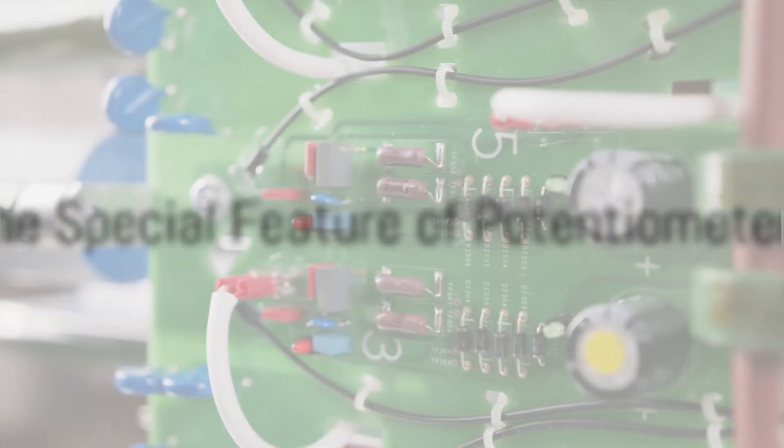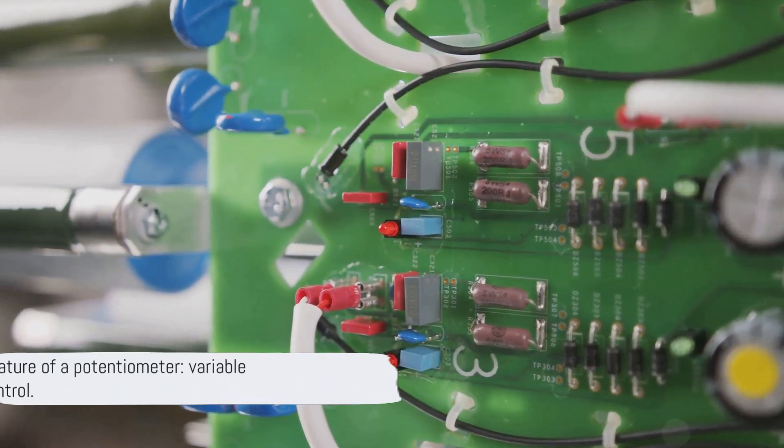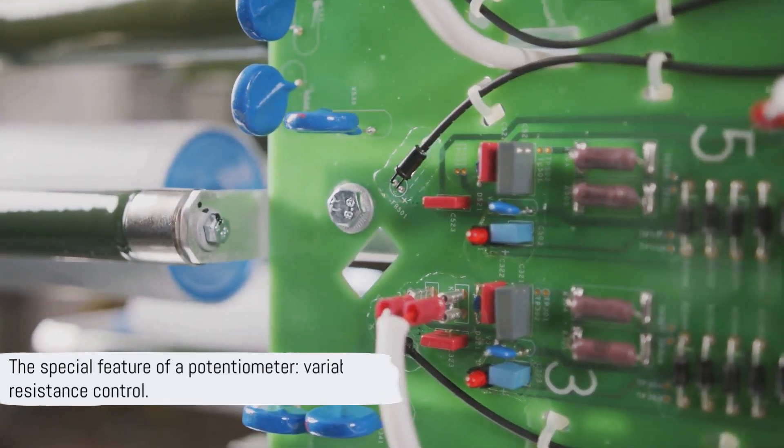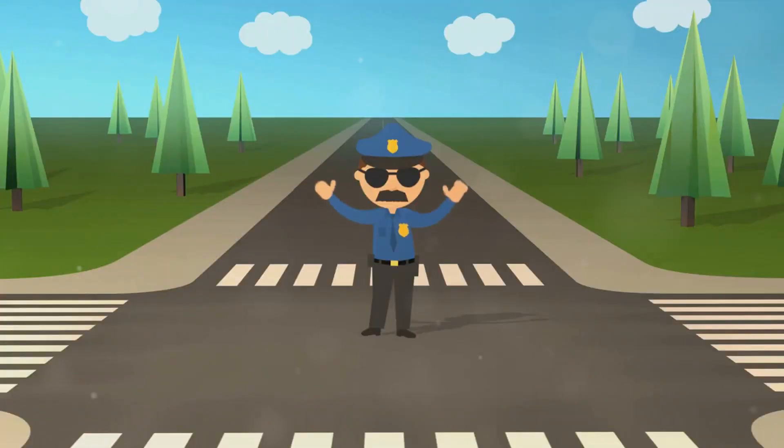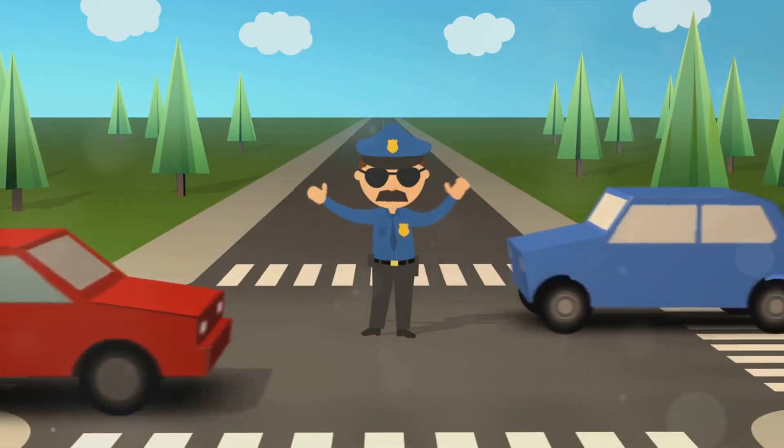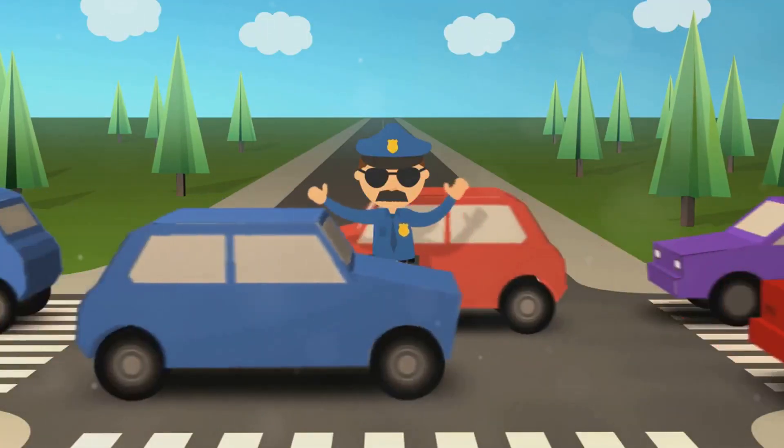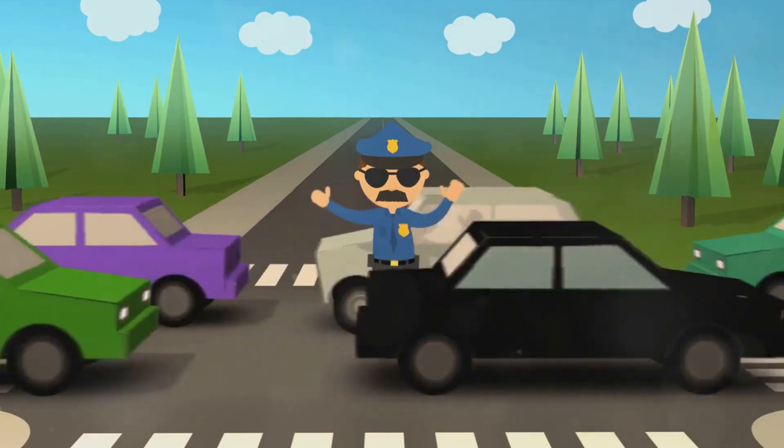But what makes a potentiometer special is that it's a variable resistor. It doesn't just resist the flow of current, it lets you control how much resistance it provides. Imagine being able to control how many cars a traffic cop lets through. That's essentially what a potentiometer does.